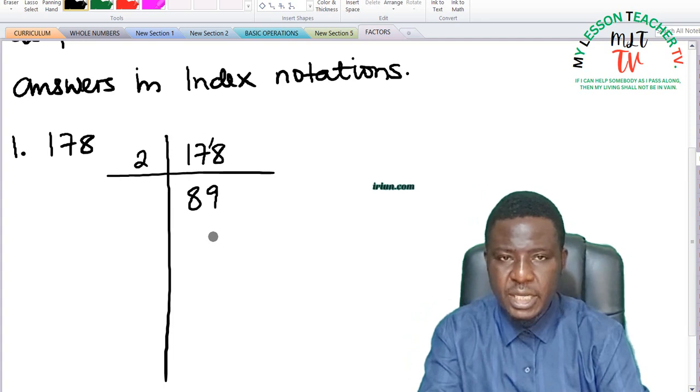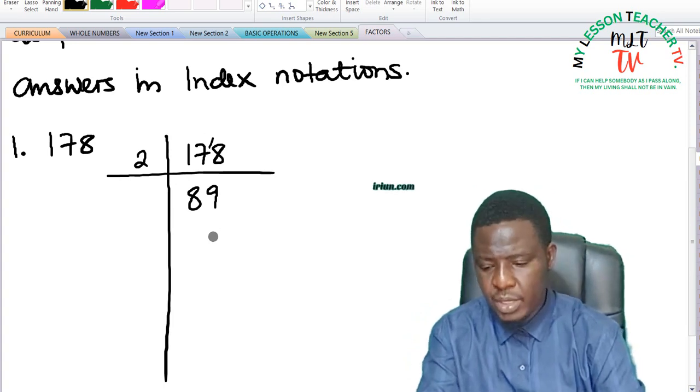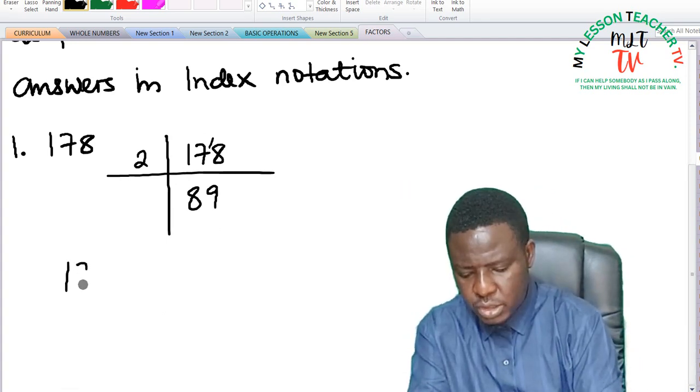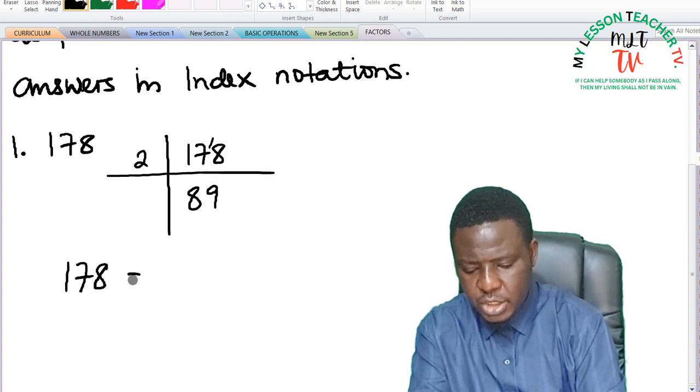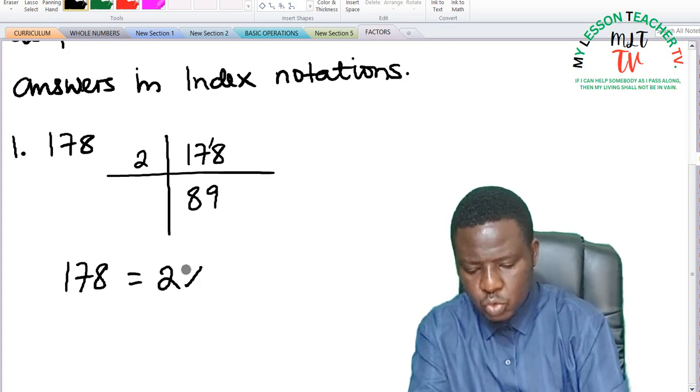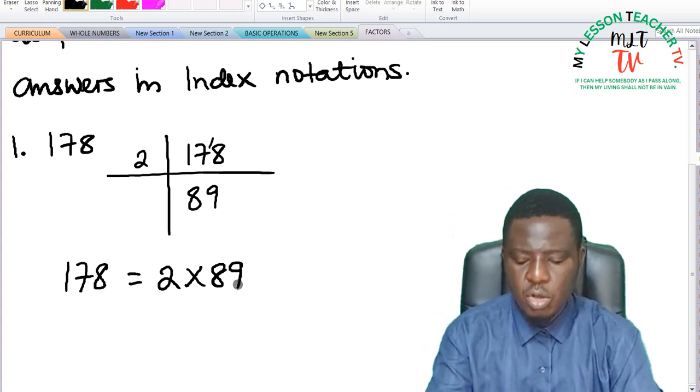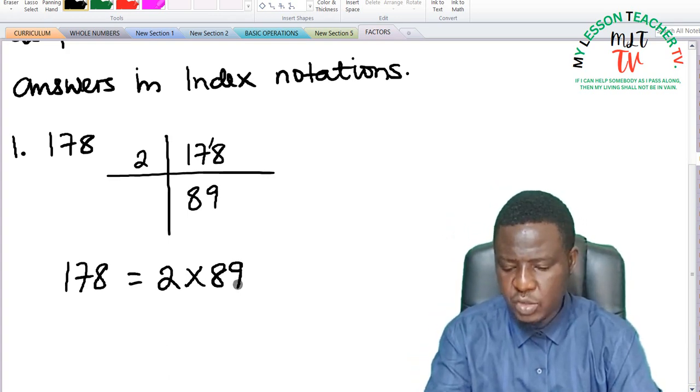Since 89 is a prime number, it therefore means that 178 can be expressed as 2 times 89. This is how you can express it as a product of its prime factors.